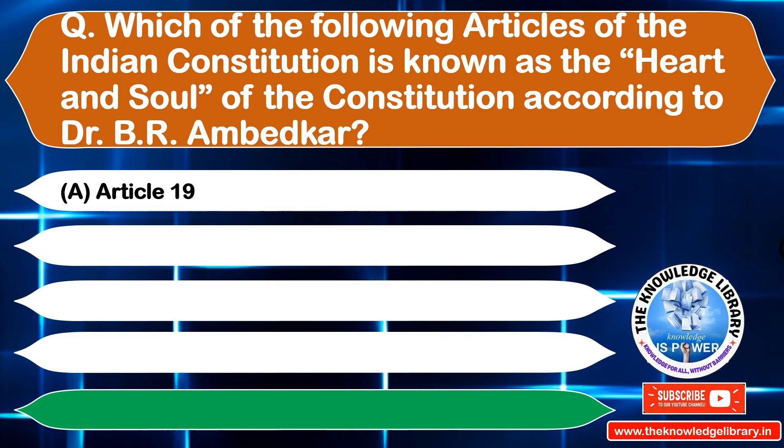The next question is: right to life and personal liberty is guaranteed under which article? Option A: Article 19, Option B: Article 20, Option C: Article 21, Option D: Article 22. The correct answer is Option C: Article 21.